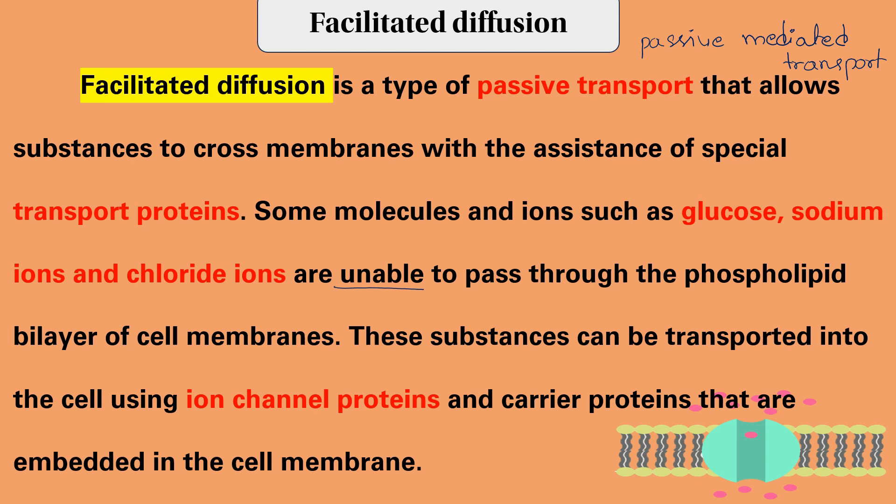Let's look at transport proteins. In order to separate and move proteins across the membrane, we use transport proteins. These proteins help separate and shuttle molecules from one side of the membrane to the other.